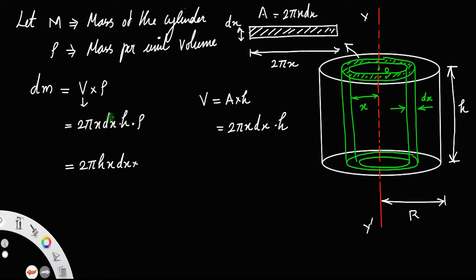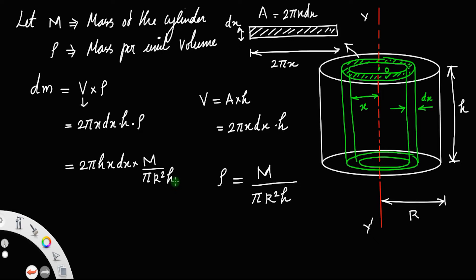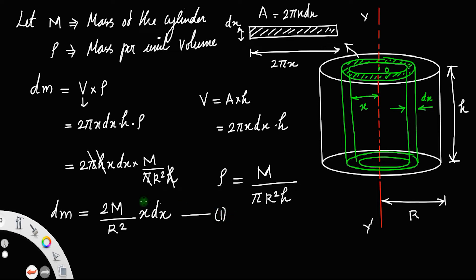Density, or mass per unit volume, equals mass divided by volume of the cylinder. The volume of the cylinder is πr²h, where r is the radius and h is the height. Cancelling h and h, and π and π, the equation becomes dm = (2m/r²) x dx. Let us call that equation number 1.